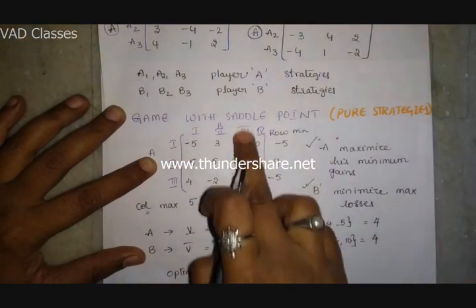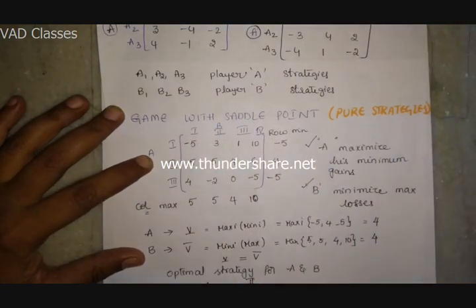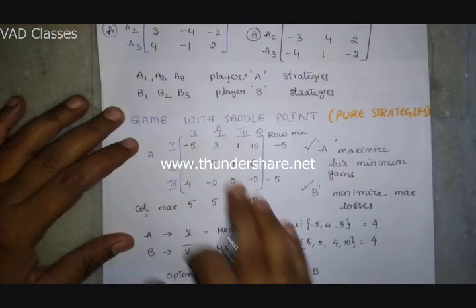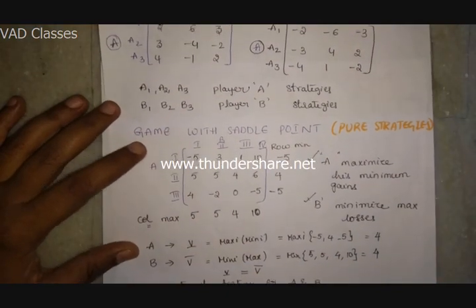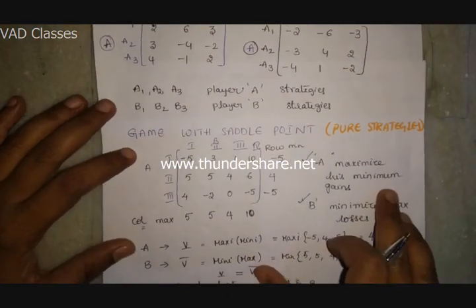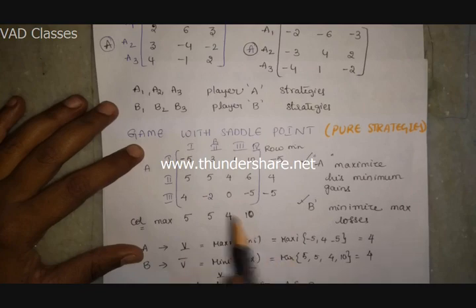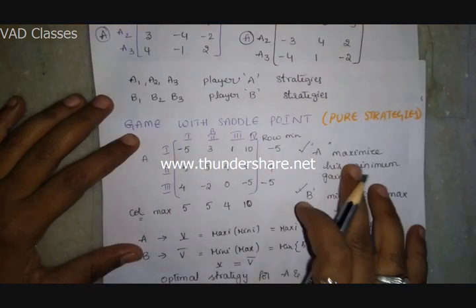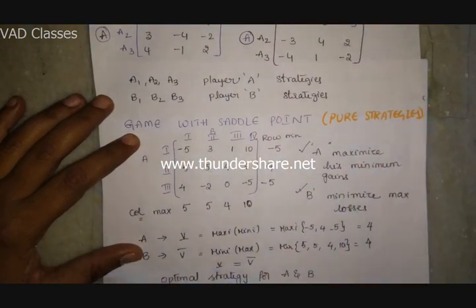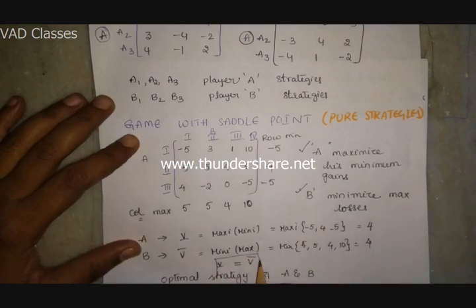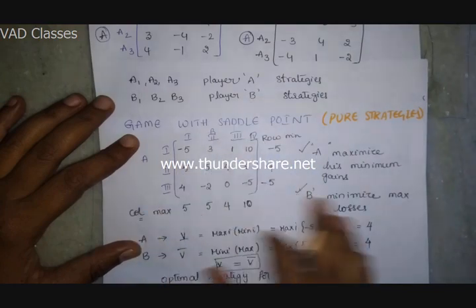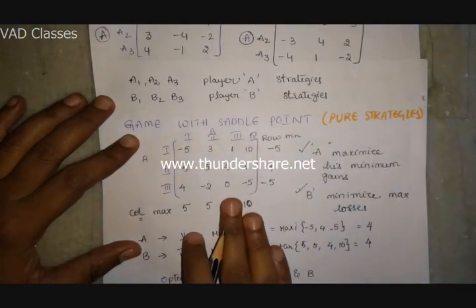The optimal strategy for player A is the second strategy, and for player B it is the third strategy. The game has a saddle point and we use this procedure to identify it.